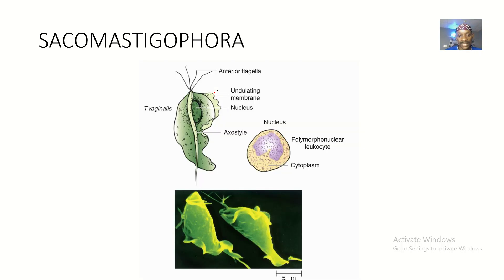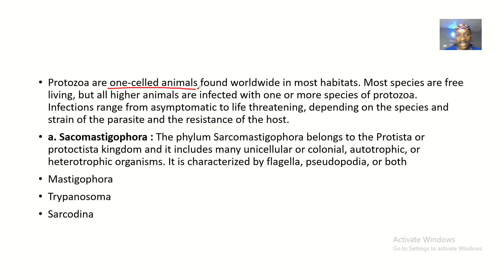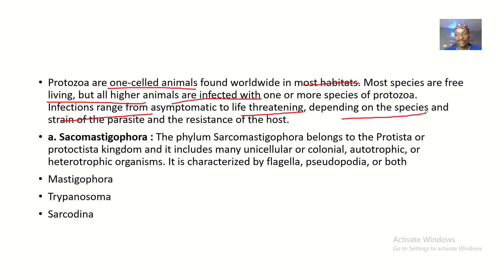For the definition of protozoa, protozoa are one-celled animals that are found worldwide in most habitats. Most species of protozoa are free-living, but all animals are infected with one or more species of protozoa. Infections range from asymptomatic and mild types to life-threatening, depending on the species of protozoa infecting you, the strain of the parasite, and the resistance of the host — specifically the immune system level of the host. If a host has a weak immune system, there is a higher probability of the person developing a protozoa disease.